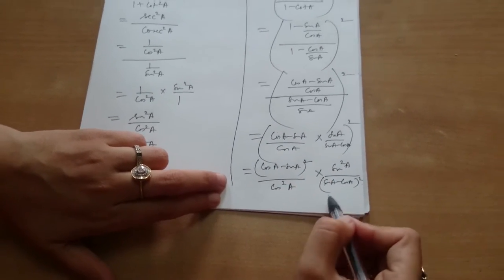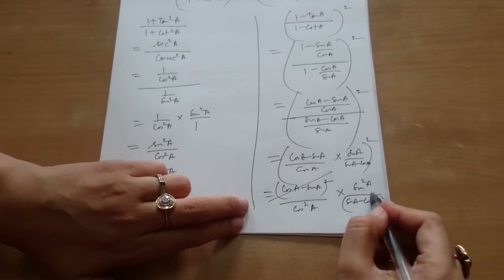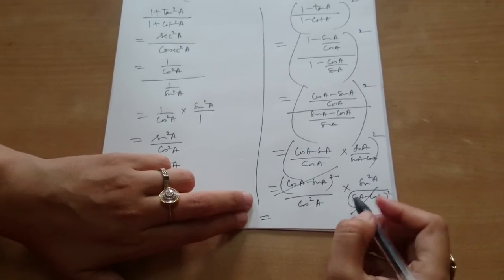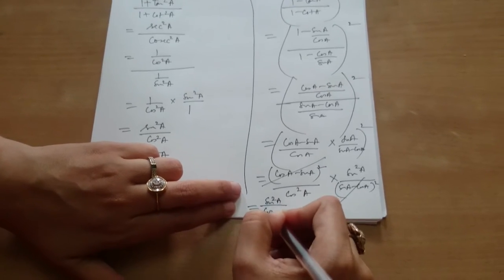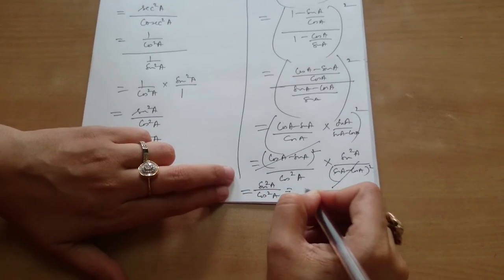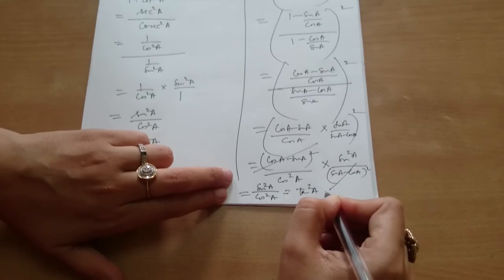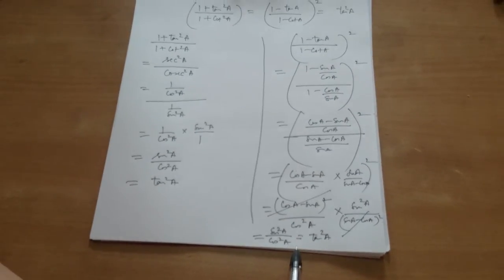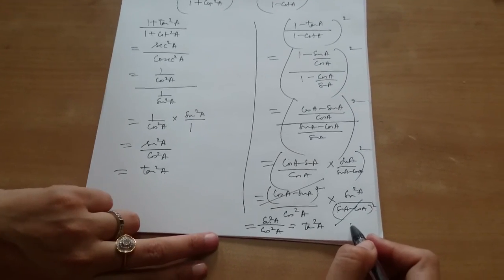Can we cancel these two? Yes. This is equal to sin²A / cos²A, which is equal to tan²A. And both these expressions are equal to tan²A. Good job.